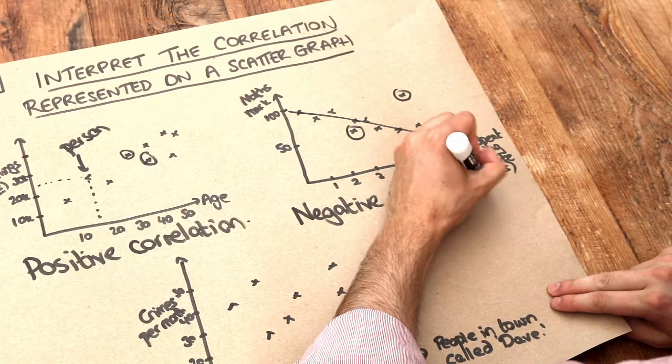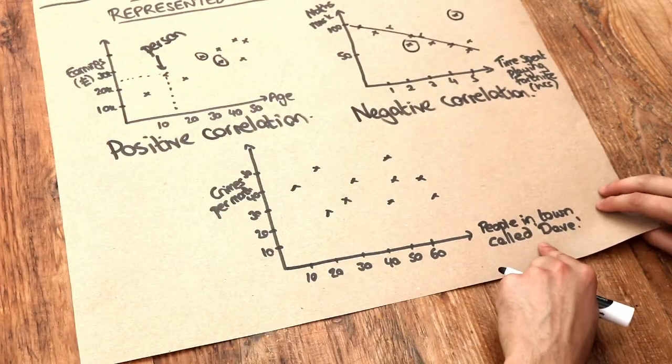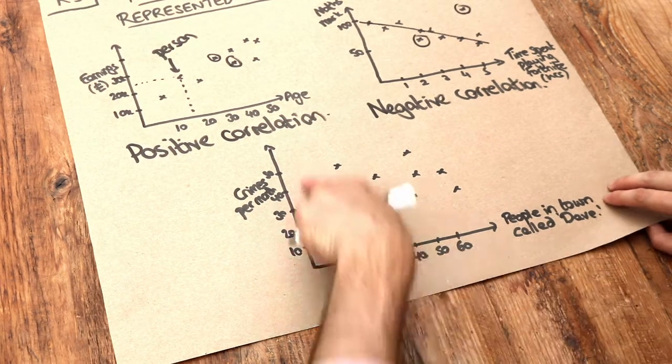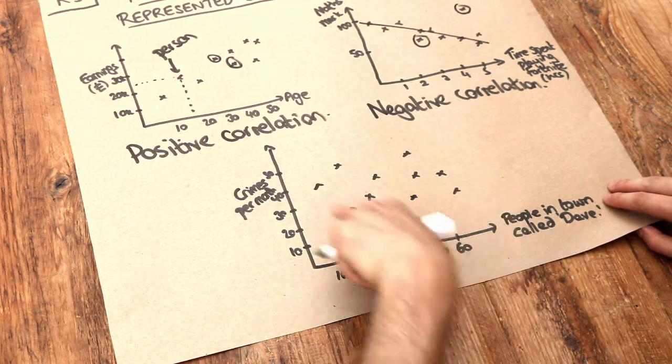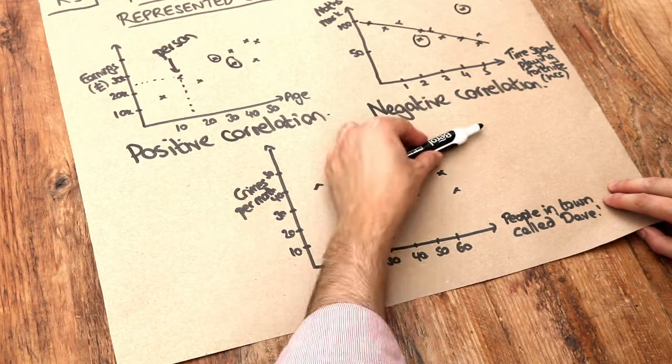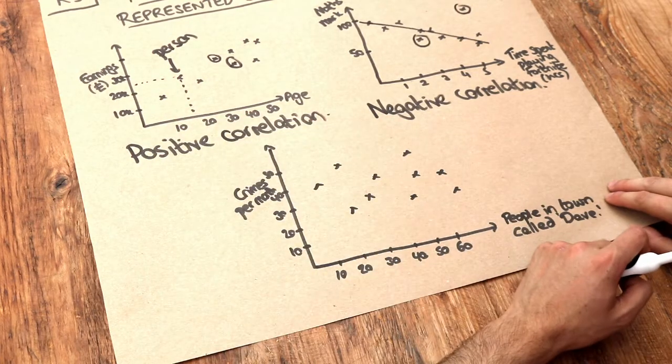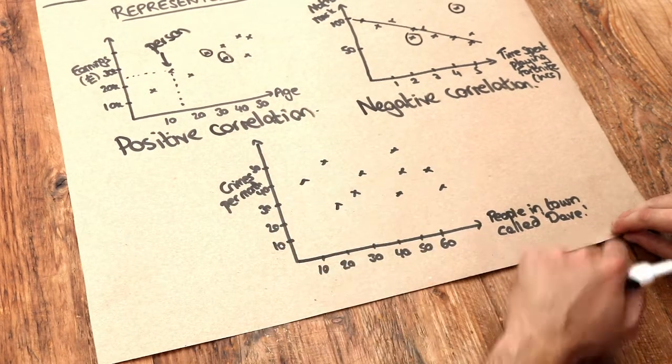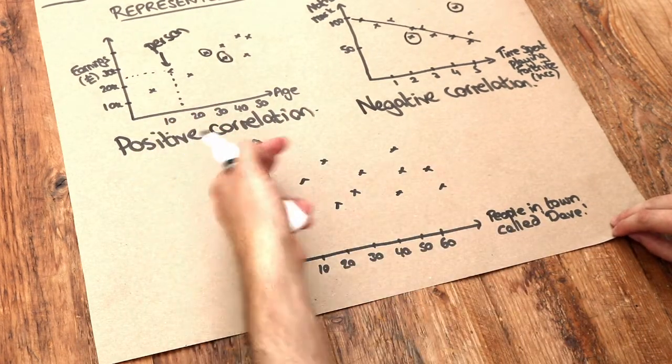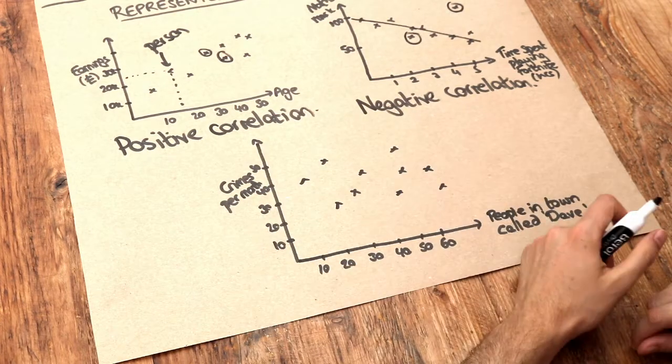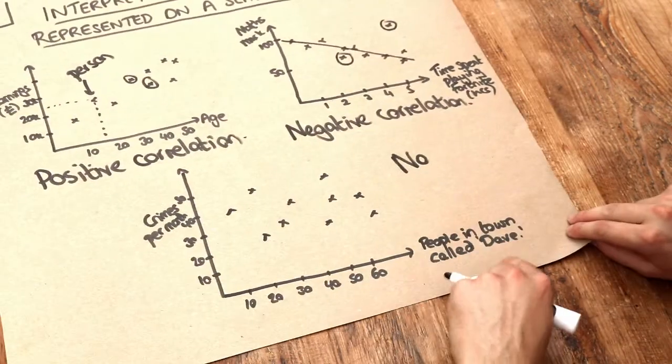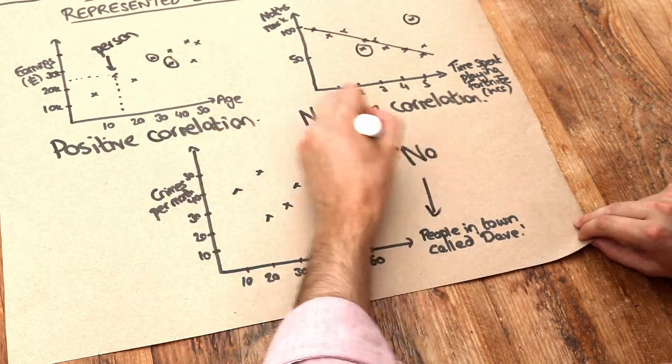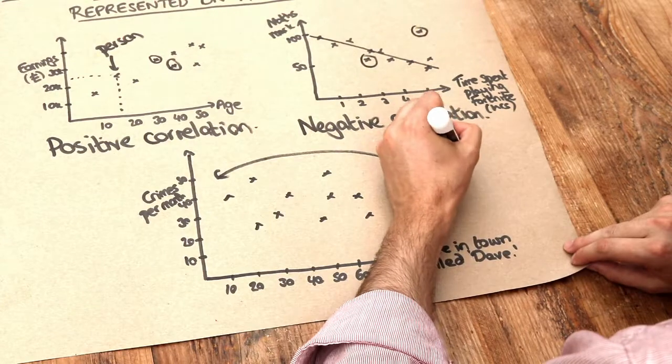Now what about this last one? People in town called Dave and the number of crimes per month. Can you see there's no trend in this data at all? There's no uphill trajectory, no downhill trajectory. It seems to be completely random—the crimes per month and the people called Dave don't seem to have any relationship. If that happens, we say that the people in the town called Dave and the crime rate have no correlation.